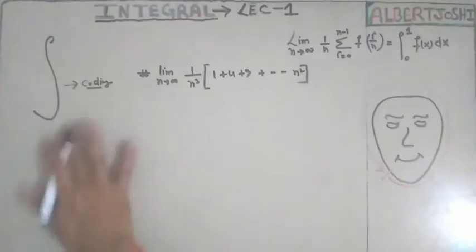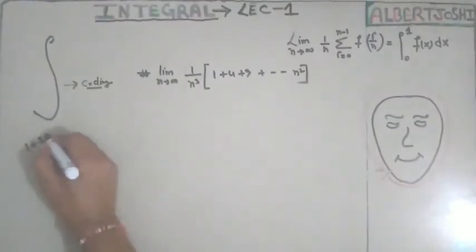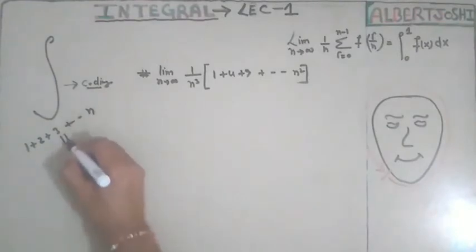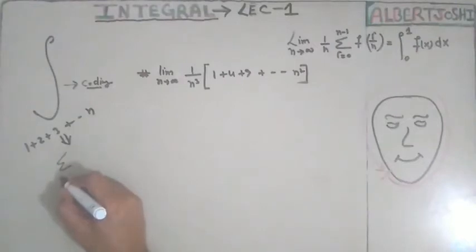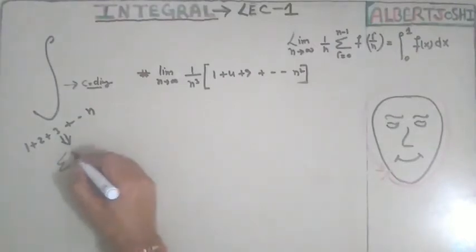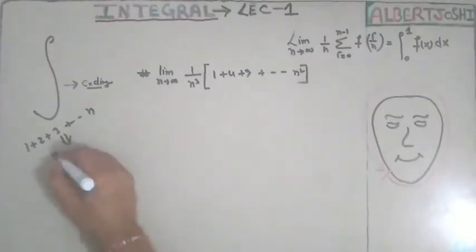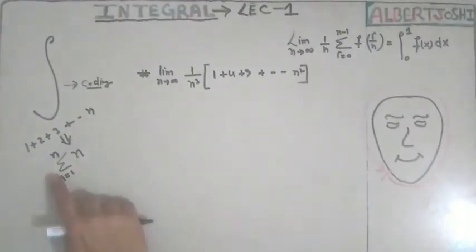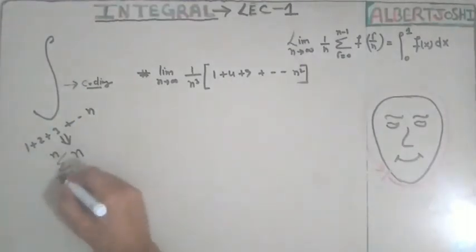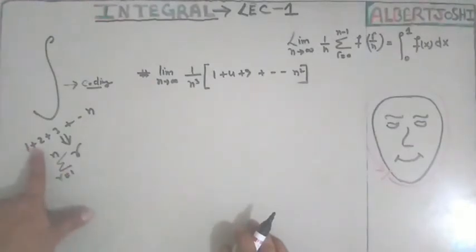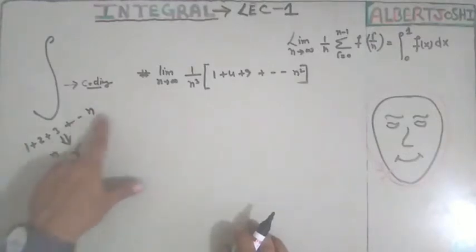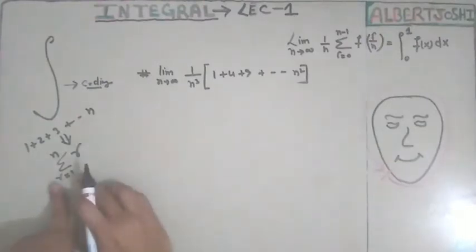Suppose you have the series 1 plus 2 plus 3 up to n. How do you represent this in a short form? You use the summation symbol, where n goes from 1 to n. You can also write r equal to 1 to n and write r inside. The summation means you put r equal to 1, 2, 3, 4, 5, 6, 7, 8 — all values. Then we will convert this summation to integration.